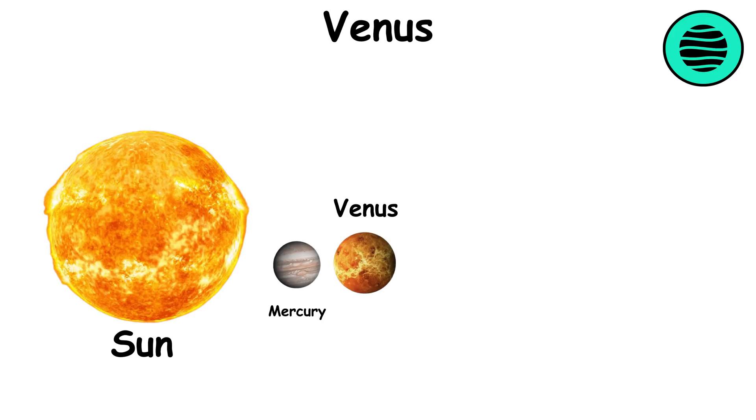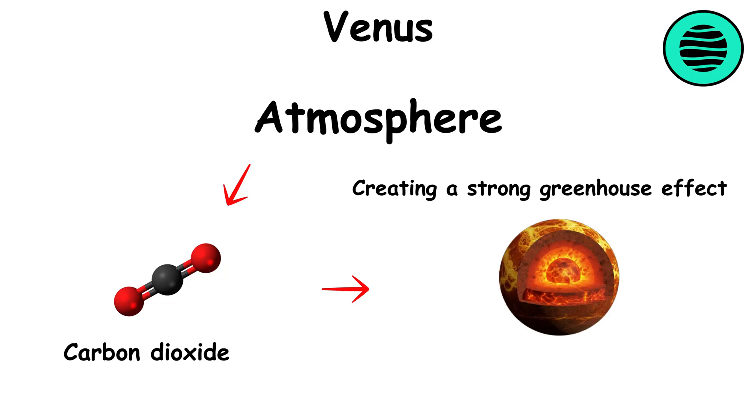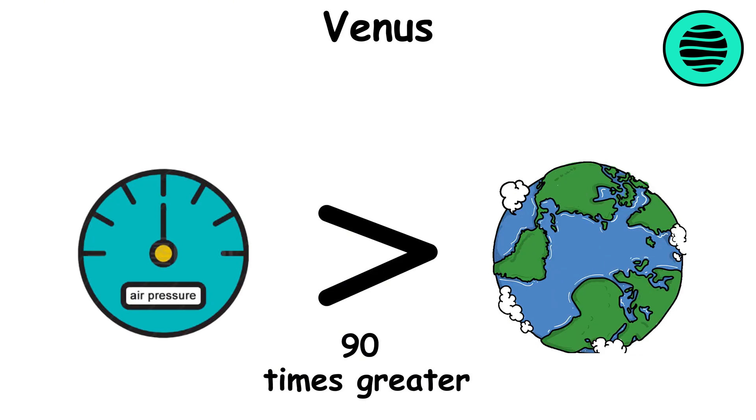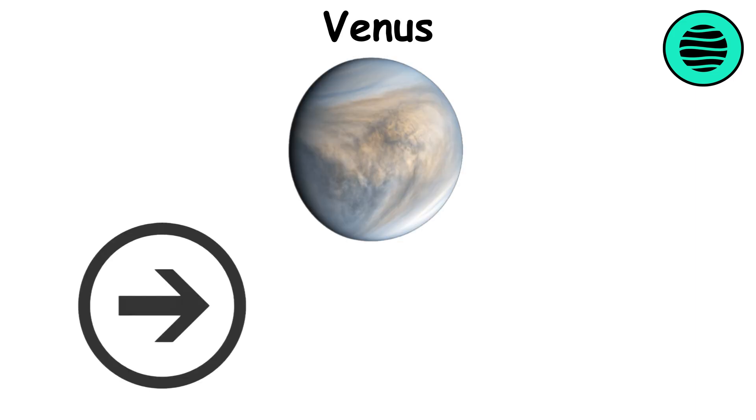Venus is the second planet from the Sun and the hottest in the solar system. Its atmosphere is mostly carbon dioxide, creating a strong greenhouse effect, heating the surface to plus 869 degrees Fahrenheit. The pressure here is 90 times greater than on Earth, and the clouds consist of sulfuric acid. Venus rotates in the opposite direction, and its day lasts longer than its year.